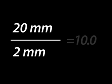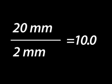For example, if you have a lens with a focal length of 20 millimeters and the opening of the iris where the shutter blades stop down is 2 millimeters, then 20 millimeters divided by 2 millimeters is 10.0 — or an aperture of f/10.0.